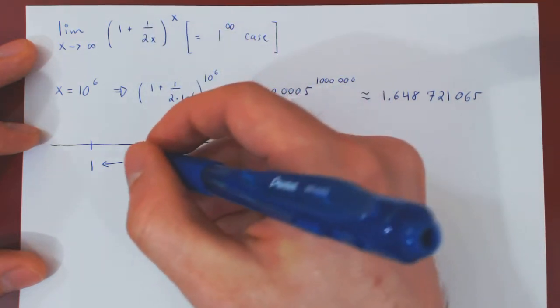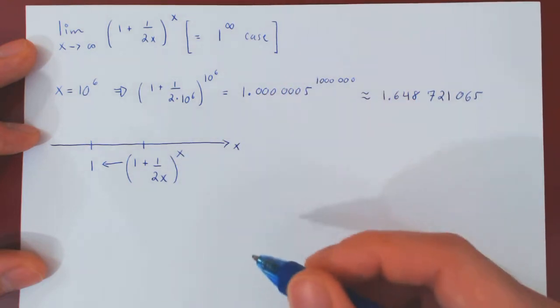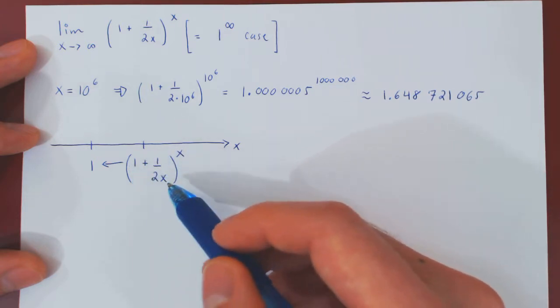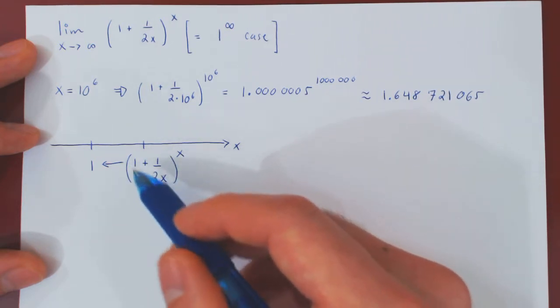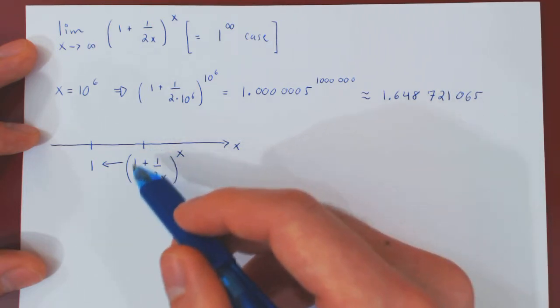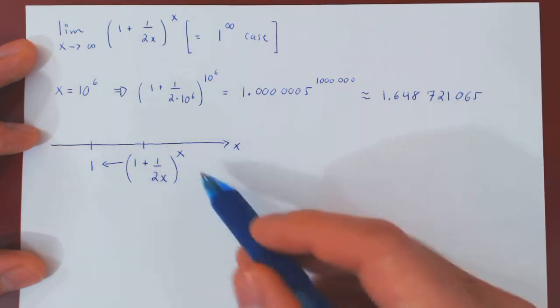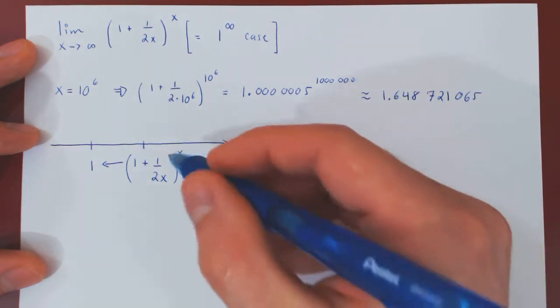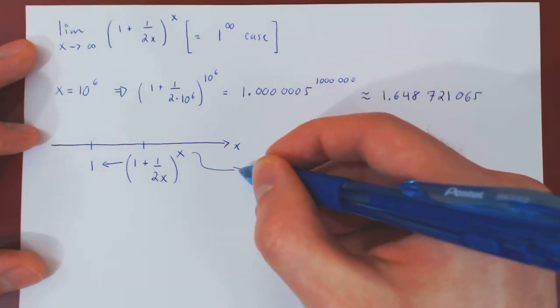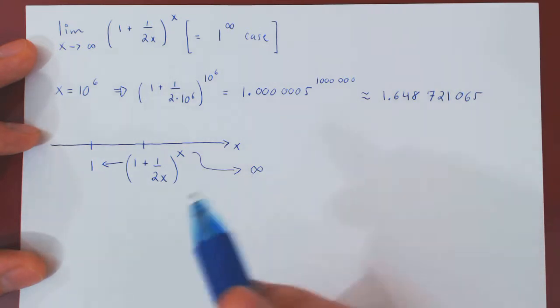So let's separate the behavior of the base from the behavior of the exponent. If you simply look at this, as we've just said, as x tends to infinity, 1 over 2x shrinks to 0, so the base of our expression is trying to get closer to 1. But we not only have 1 plus 1 over 2x, but 1 plus 1 over 2x raised to the power of x. And now, if you think about this, because 1 plus 1 over 2x is always larger than 1, and if we take a very large power of a number bigger than 1, then this will actually make the expression grow and grow.